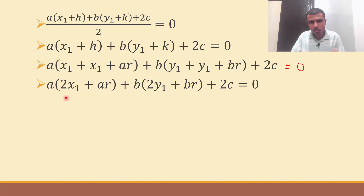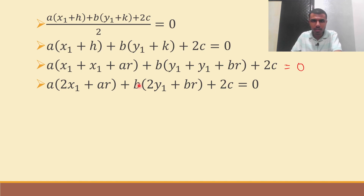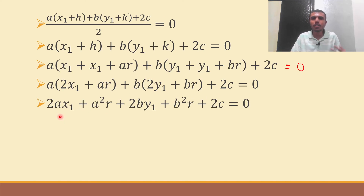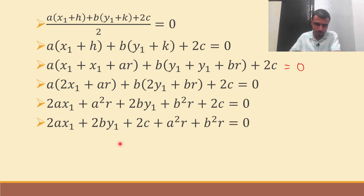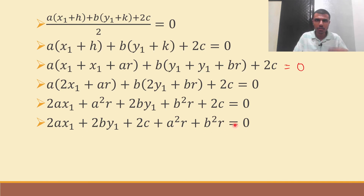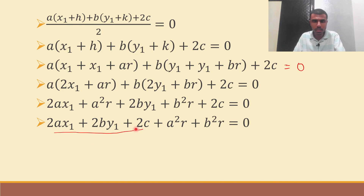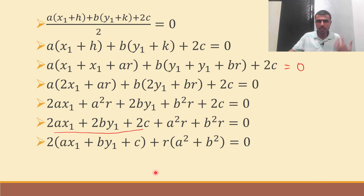So x1 plus x1 is 2x1 and AR is there; y1 plus y1 is 2y1. Multiplying out: 2Ax1 plus A squared R, likewise 2By1 plus B squared R plus 2C equals 0. Gathering x1, y1, and C terms together: 2Ax1 plus 2By1 plus 2C plus A squared R plus B squared R equals 0. Taking 2 common from the first three terms: 2 times (Ax1 + By1 + C) plus R times (A squared + B squared) equals 0.